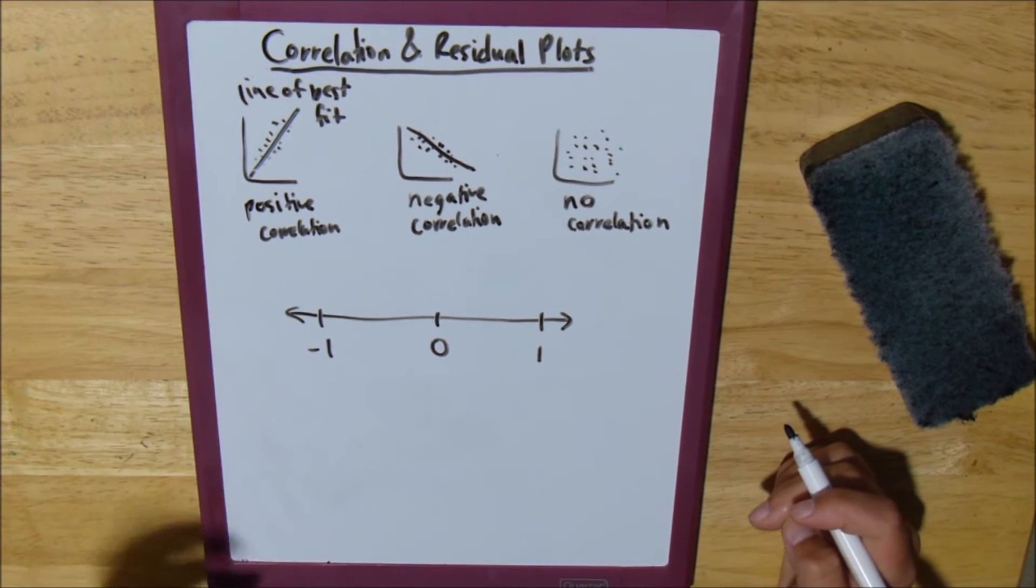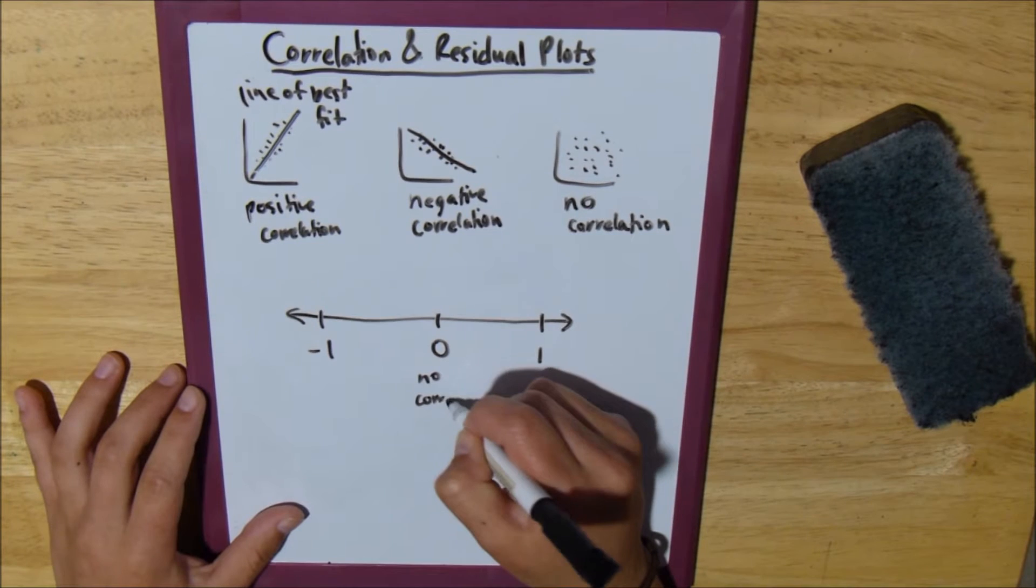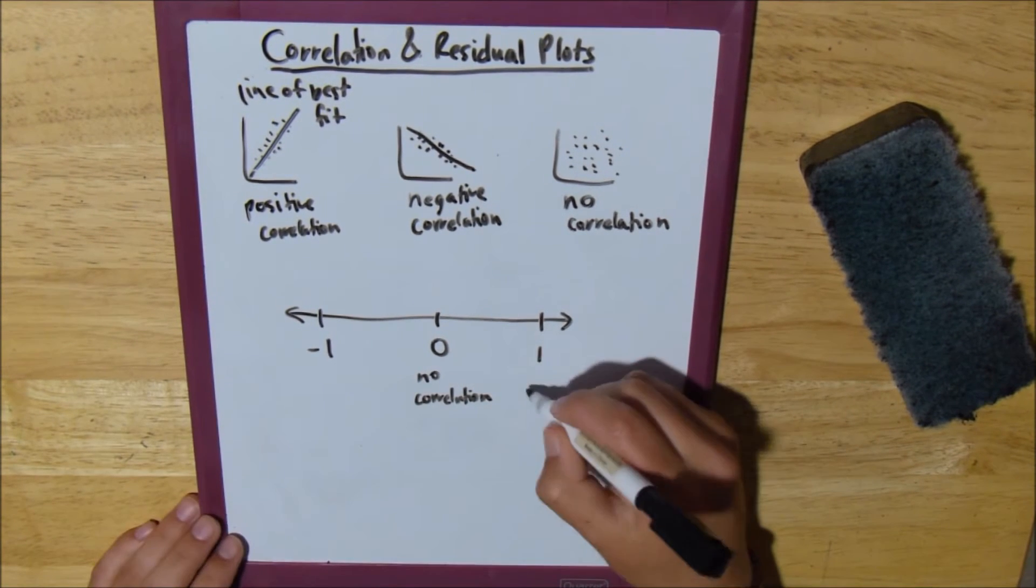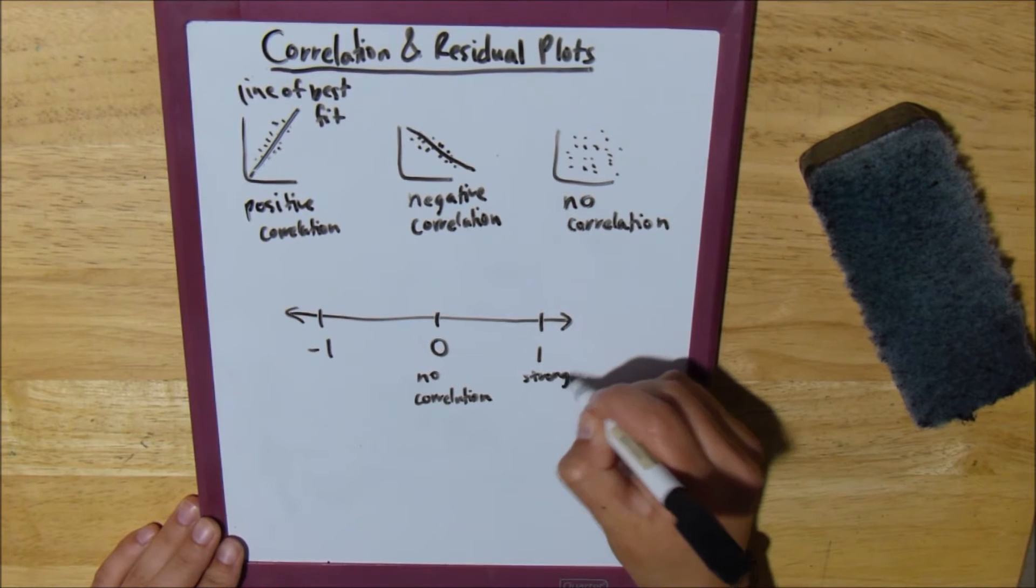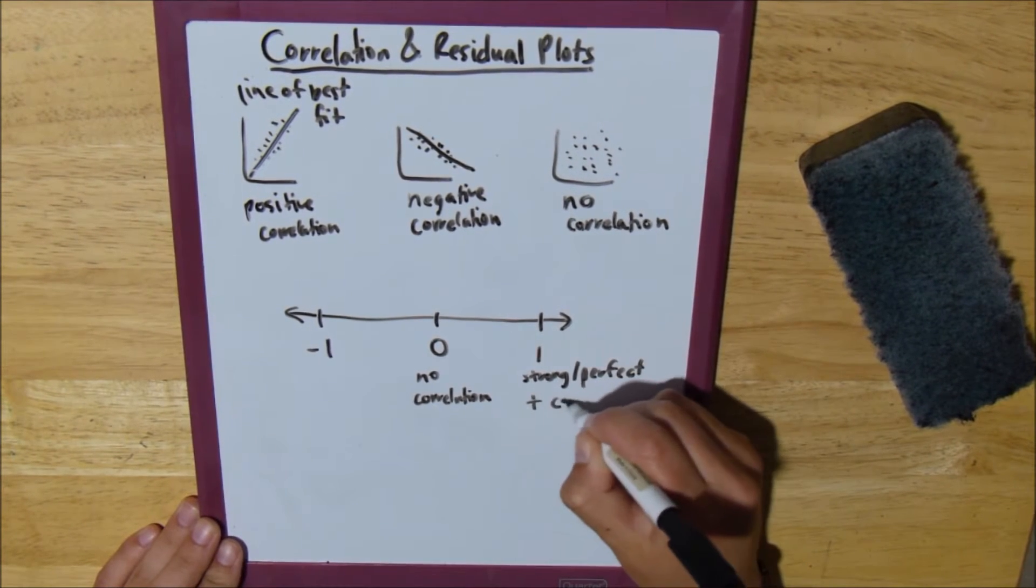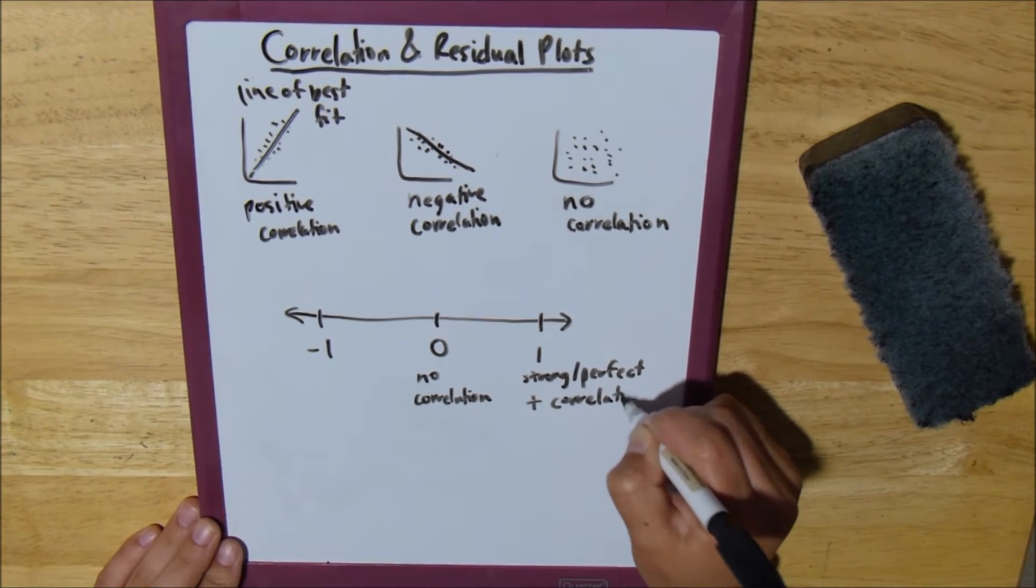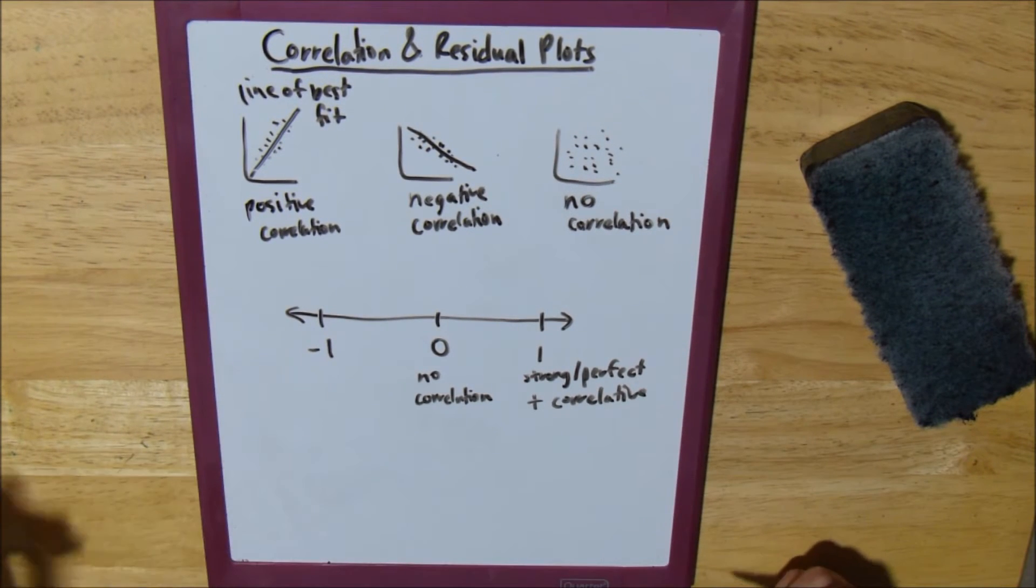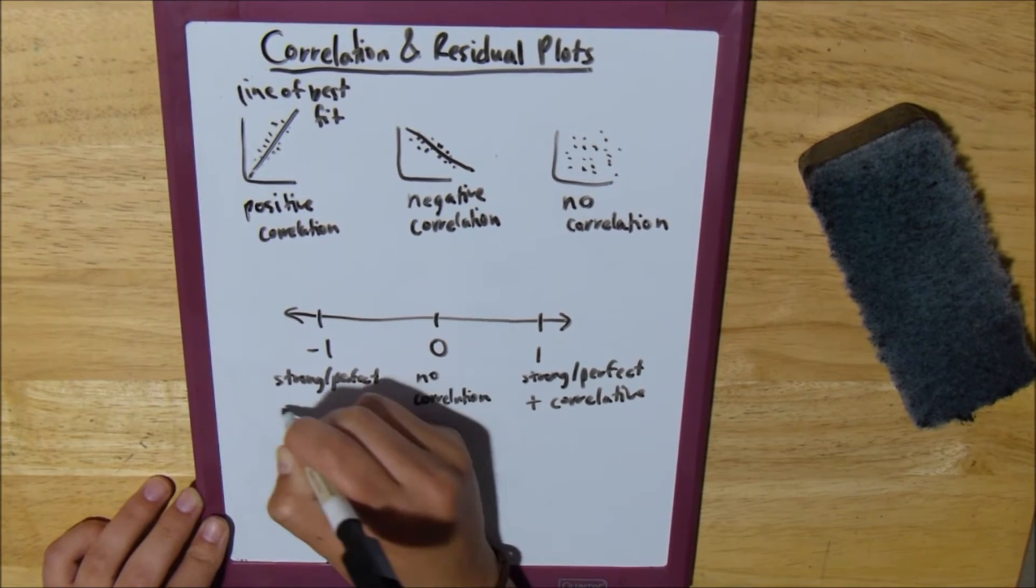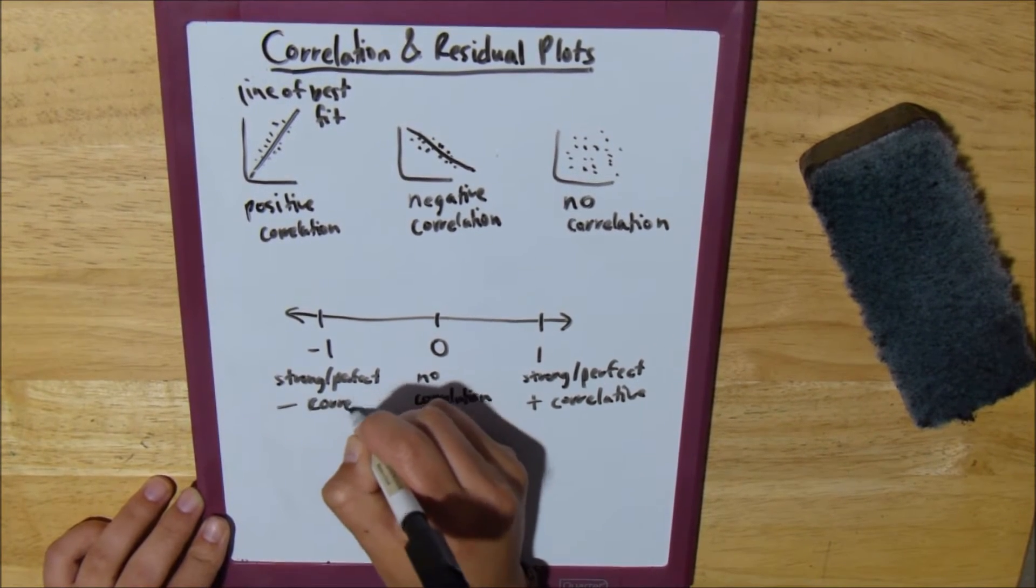Now you can probably guess that 0 means no correlation. And then our positive 1 means a strong or a perfect positive correlation. And then our negative 1 is a strong or perfect negative correlation.